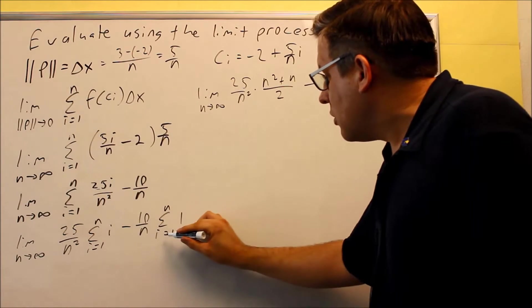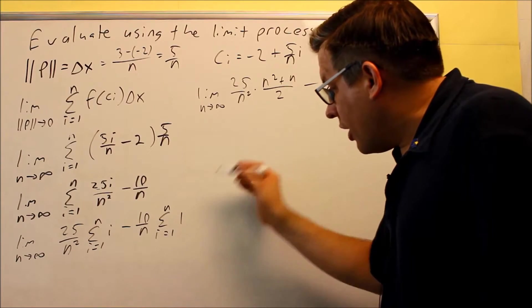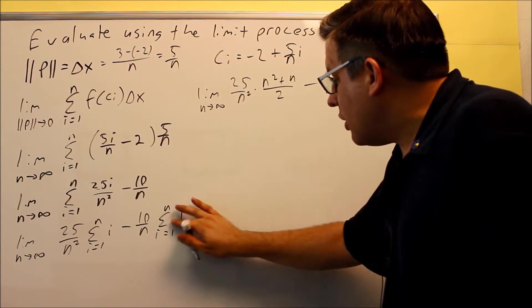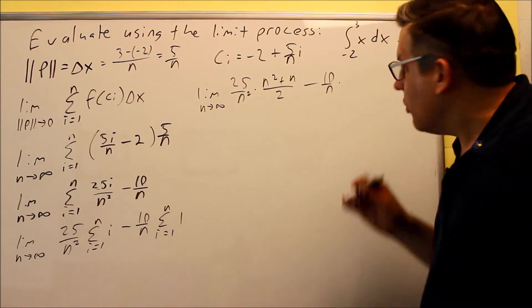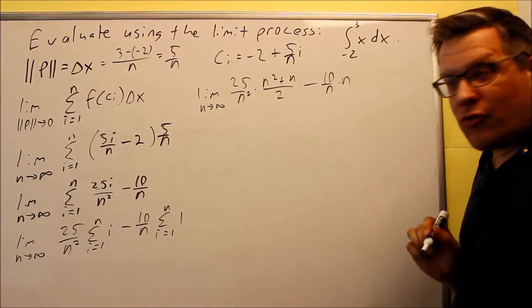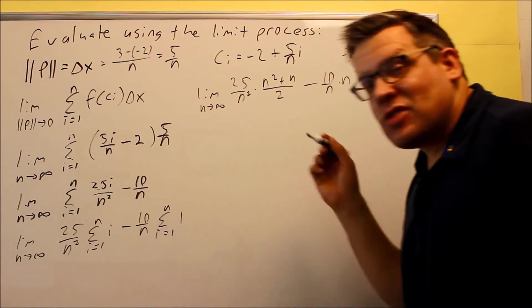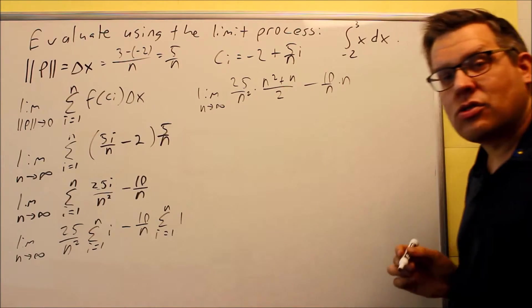And then, this right here, summation from 1 to n with a 1 there. All you're doing is you're going to multiply the 1 times the n. And if you do, you'll just get n as a result. That's that formula. It's always going to be c times n, where 1 in this case is your c value.